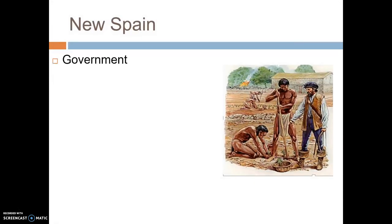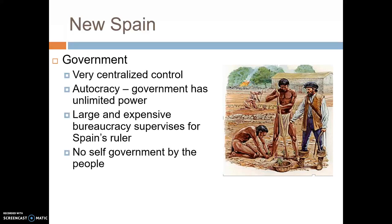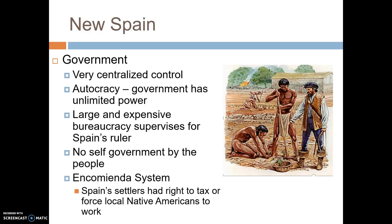The government in New Spain was very centralized with the Peninsulares — an autocracy where those in control had unlimited power. Enforcing this required a very large and expensive bureaucracy: all the people responsible for carrying out government policy — tax collectors, soldiers, and so on. There was no self-government in New Spain, no voting, no democracy, no republics. The system was called the encomienda system, in which Spanish settlers granted land had the right to tax or force local Native Americans to work for them and impose any laws or rules they wanted.